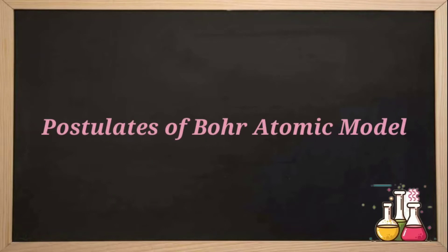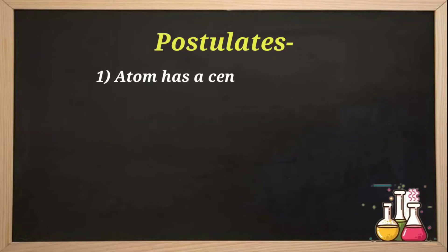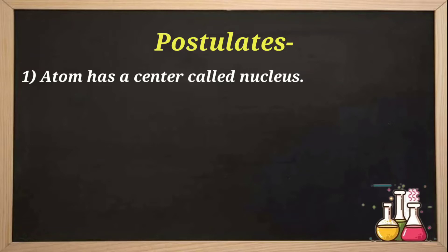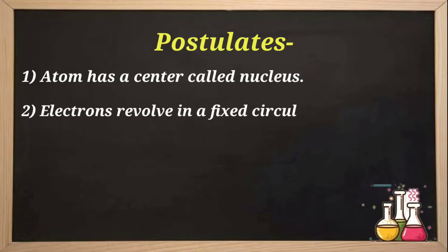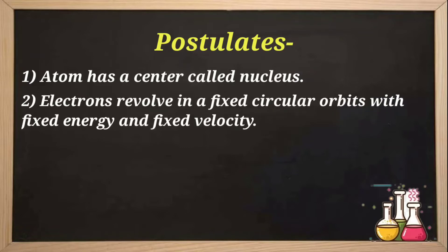The first postulate of the Bohr model was that the atom has a center called the nucleus — same as what Rutherford said. Then Bohr told that electrons revolve only in fixed circular orbits with fixed energy and fixed velocity. This was very important. He said that the electrons revolving around the atom do so only in particular fixed orbits, unlike Rutherford who said electrons just revolve without specifying fixed orbital positions.